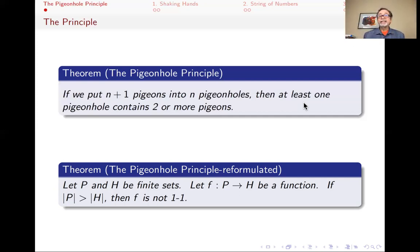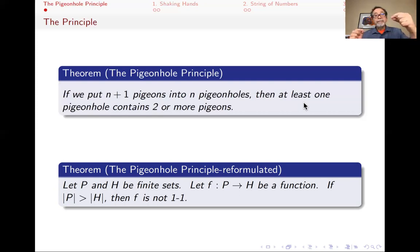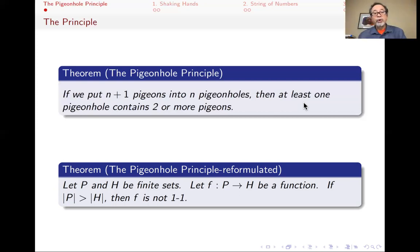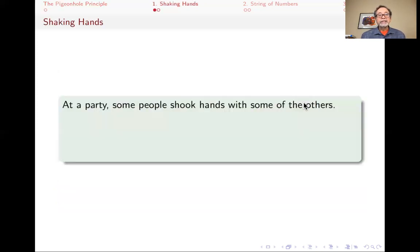And if you have that the number of pigeons is greater than the number of holes, two of the elements of P will end up in the same hole, meaning that your function is not one-to-one. So let's now see some examples. The first example is the famous shaking hands problem.